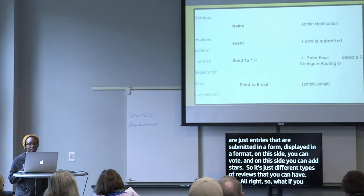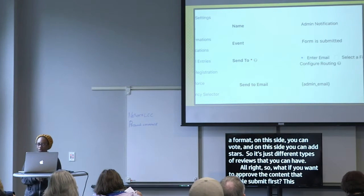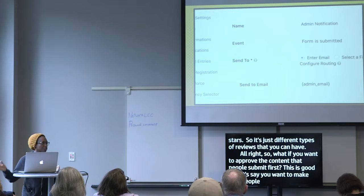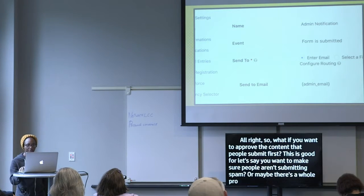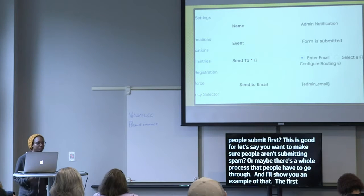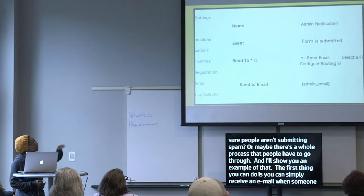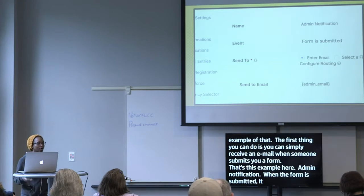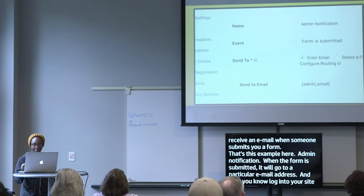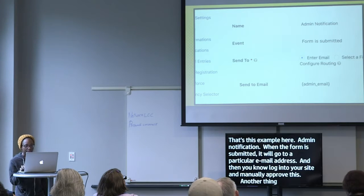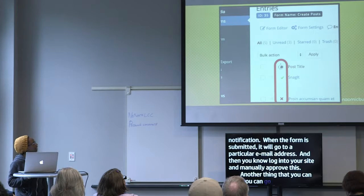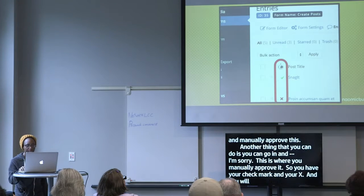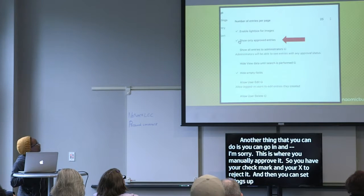What if you want to approve the content that people submit first? Maybe you want to make sure people aren't submitting spam, or there's a whole process things have to go through. The first thing you can do is simply receive an email when someone submits your form — admin notification when the form is submitted, sent to a particular email address. Then log into your site and manually approve it. Here's where you manually approve: you have a checkmark and an X. If you say no, it's rejected. You can set things up to only display approved content.